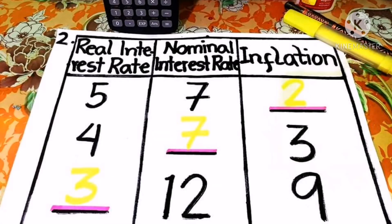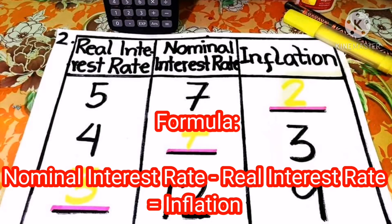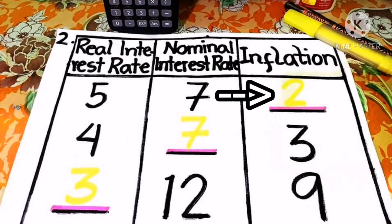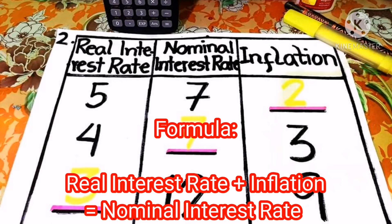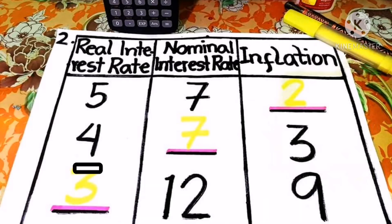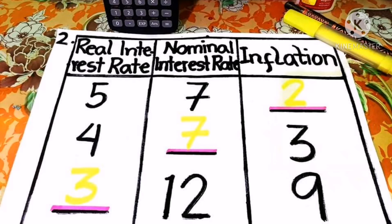For number 2, we need to fill in the missing values for real interest rate, nominal interest rate, and inflation. For the first row, inflation = nominal interest rate − real interest rate, so 7 − 5 = 2; inflation is 2. For the second row, nominal interest rate = real interest rate + inflation, so 4 + 3 = 7; nominal interest rate is 7. For the third row, real interest rate = nominal interest rate − inflation, so 12 − 9 = 3; real interest rate is 3.